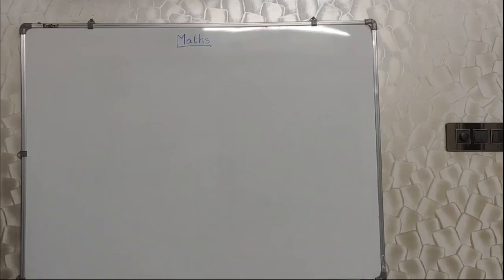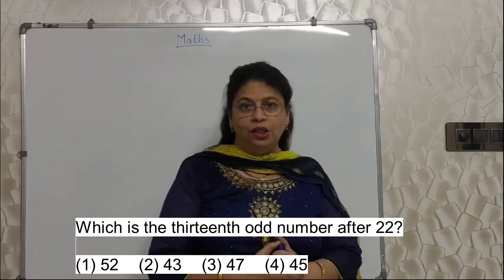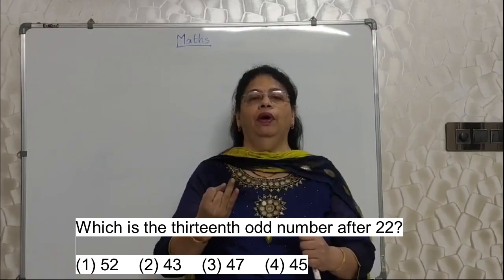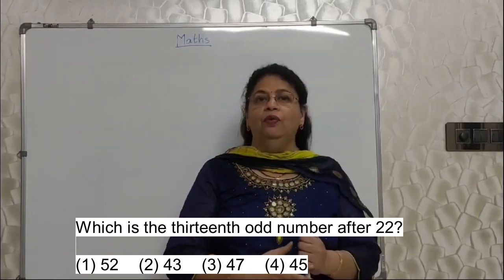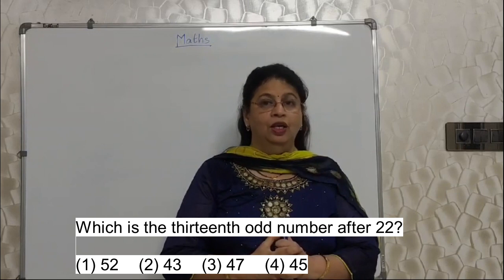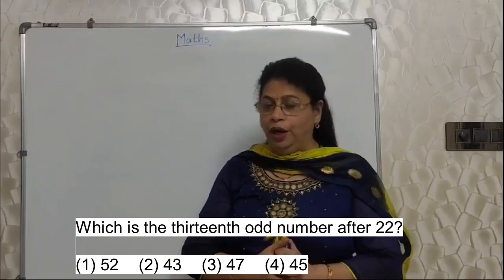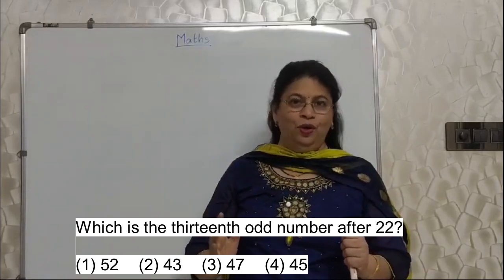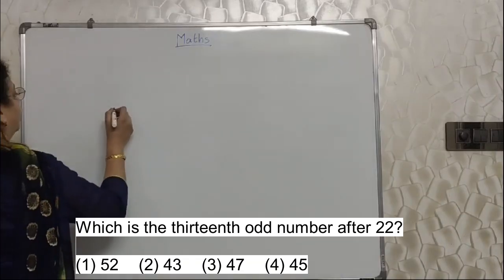Students, read the next sum properly. Which is the 13th odd number after 22? I have seen students doing it manually. 22 ke baad aata hai 23 then 25. No. We are giving scholarship. We have to work smartly. And to work smartly we have different formulae. So this is also based on formula. I have already discussed this formula in one of my earlier videos. So see all the videos. In each video you will gain something or the other. Chalo, I will discuss this formula again.